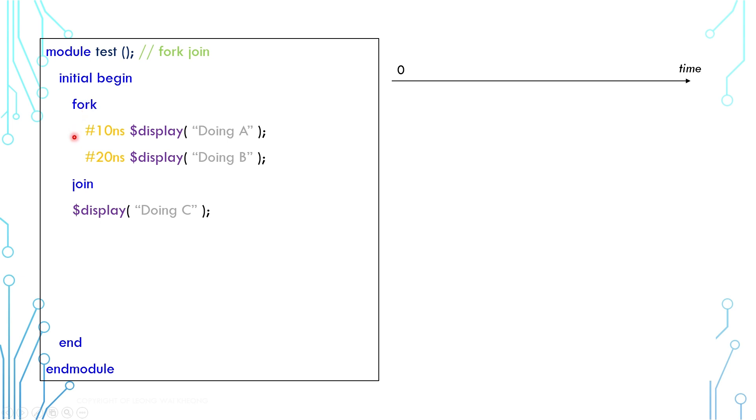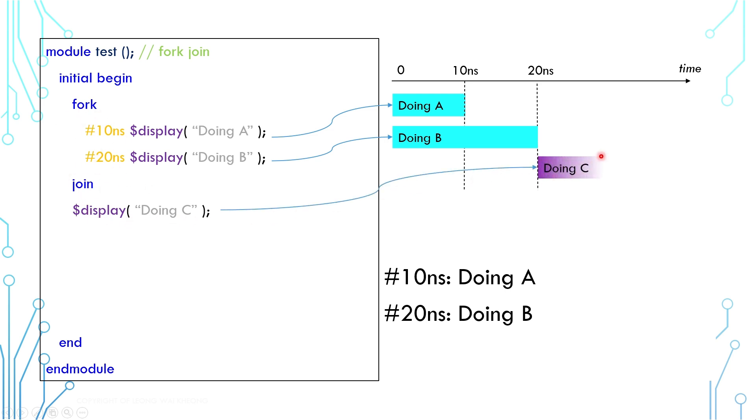To visualize it in the timing flow, A and B start from time 0. At 10 nanoseconds, A finishes. B has not finished and continues. At 20 nanoseconds, B finishes. Now everything inside the fork join construct is done, and C begins execution.